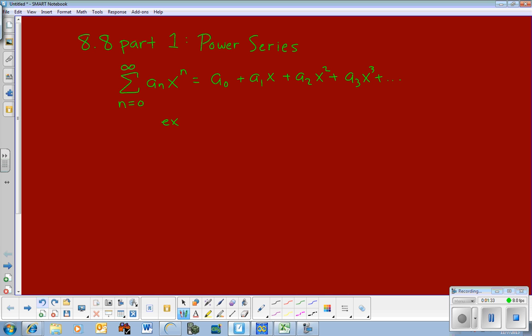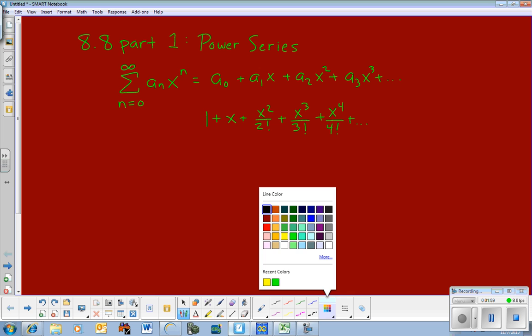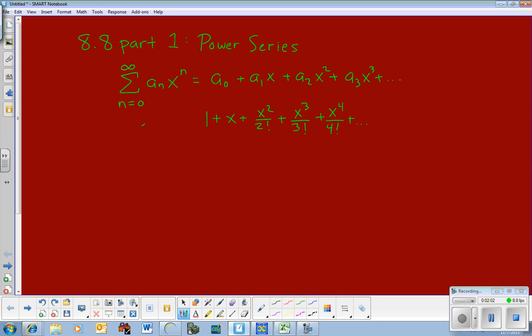So an example would be 1 plus x plus x squared over 2 factorial. And you probably, hopefully you recognize this from our Taylor polynomial talk. This is the infinite series for E to the x. And notice, it's not a series like we dealt with in the first six sections where we just had numbers and we decided, does it converge or not converge? If you were to stretch it out to infinity, is the series for E to the x. So the coefficients are 1, 1, 1 half, 1 over 3 factorial, which would be 1 sixth, and so on.